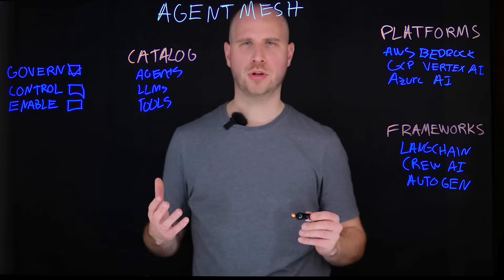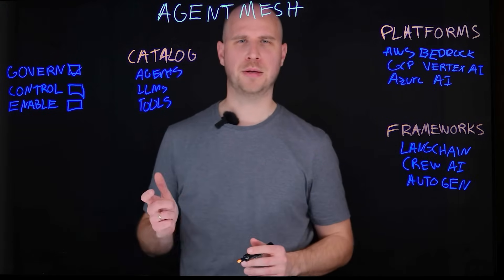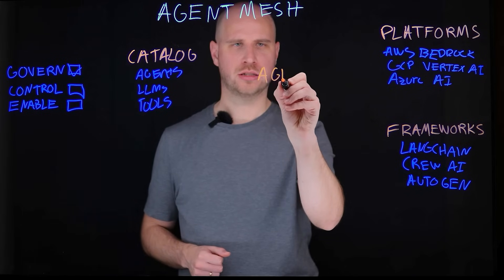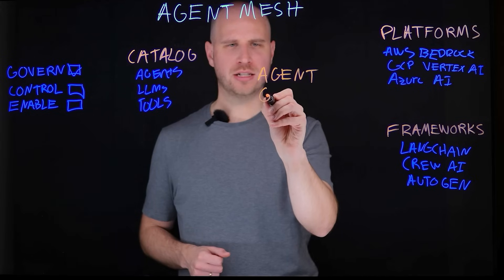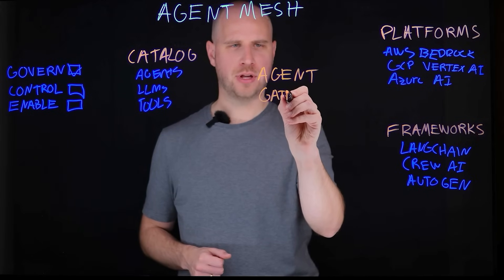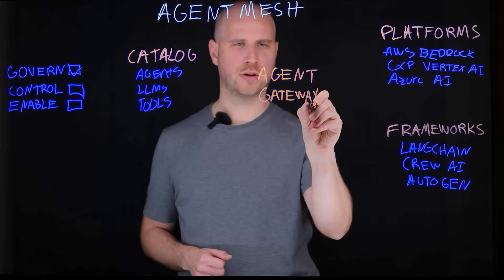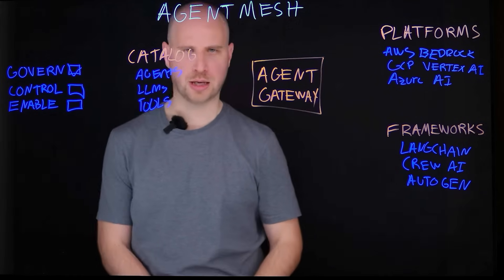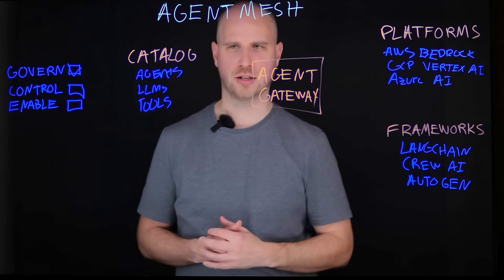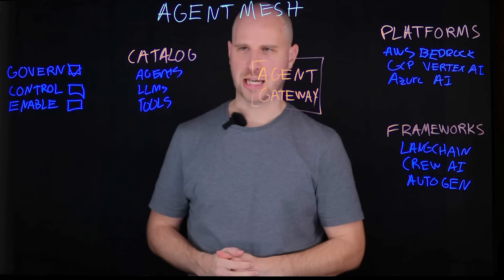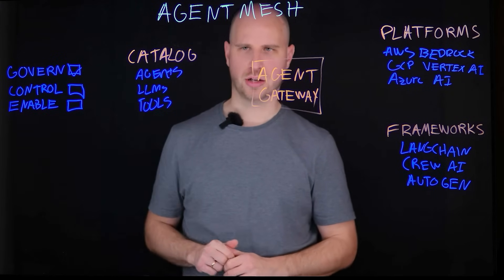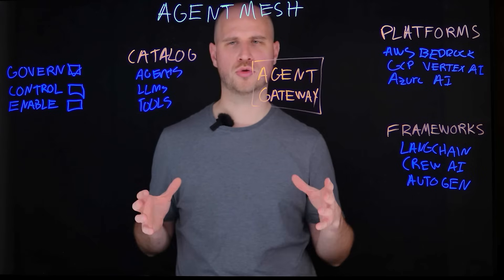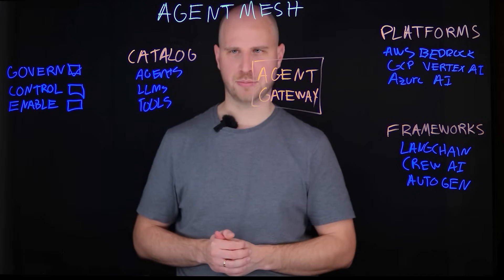In Gravity, we have built on the market-leading API and event gateway and evolved it into an agent gateway. An agent gateway does very similar things as a traditional API or event gateway, but it adds a few very important capabilities for your agent infrastructure. You can pick any agent in your catalog and basically make a proxy over the platforms and frameworks to ensure that you can control how that agent is being invoked.